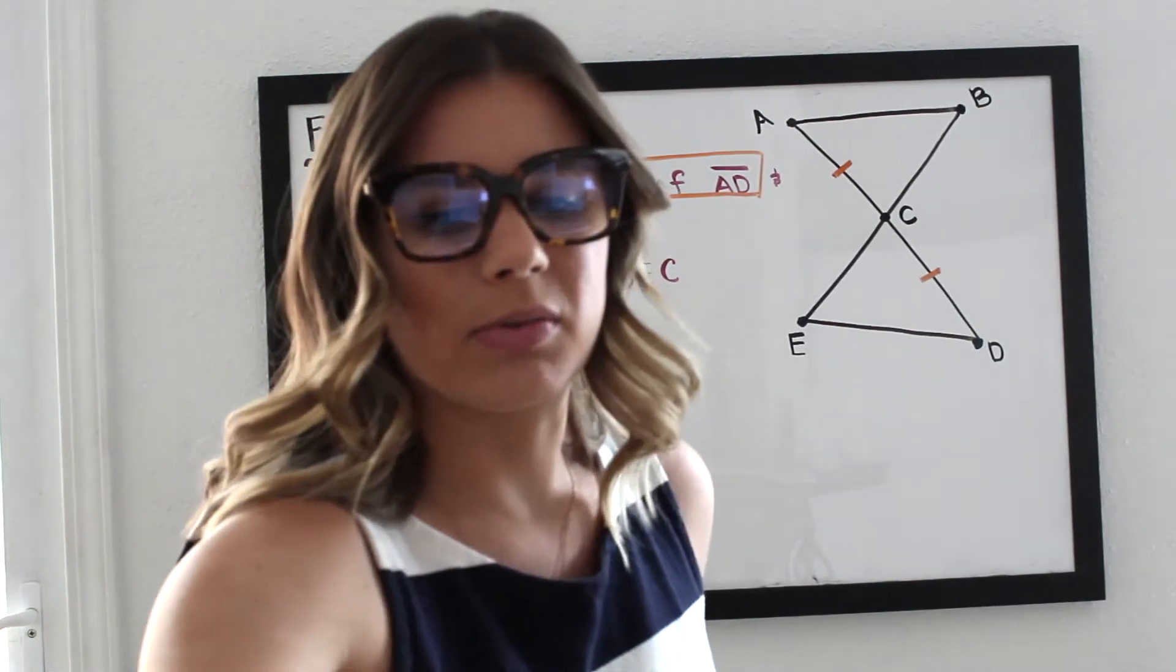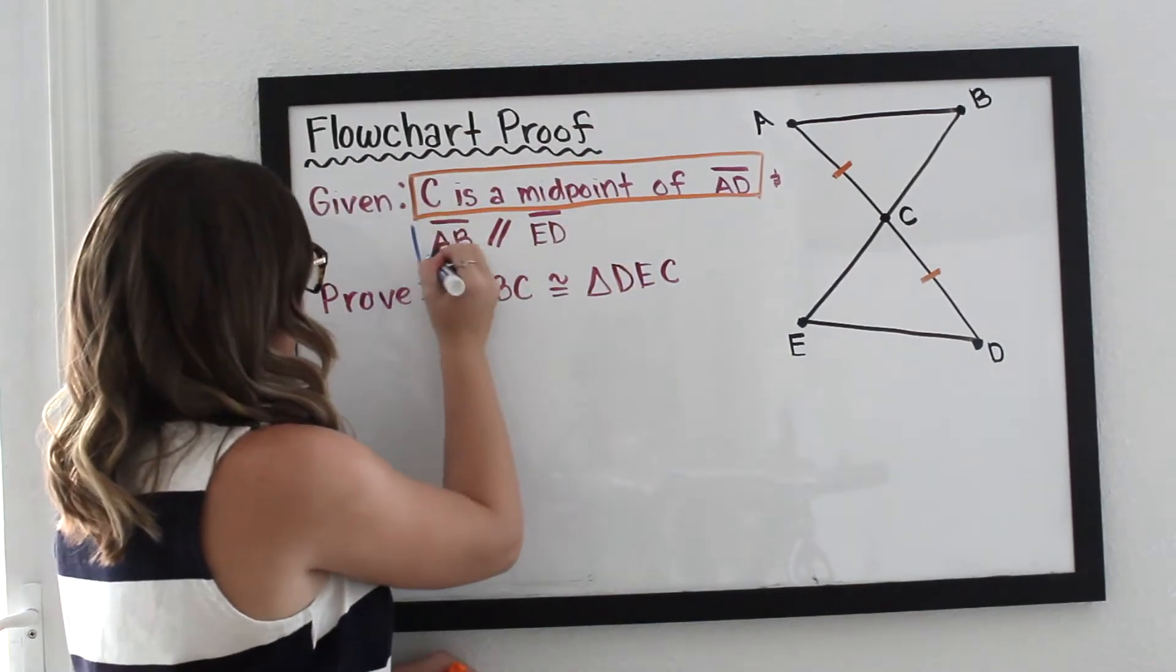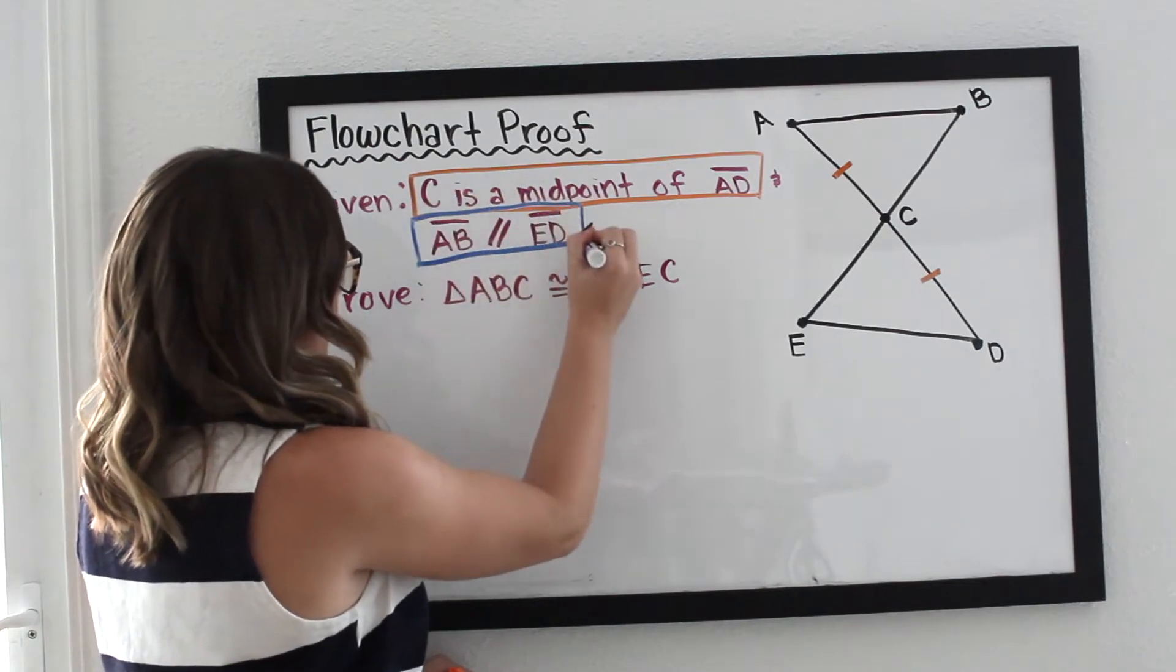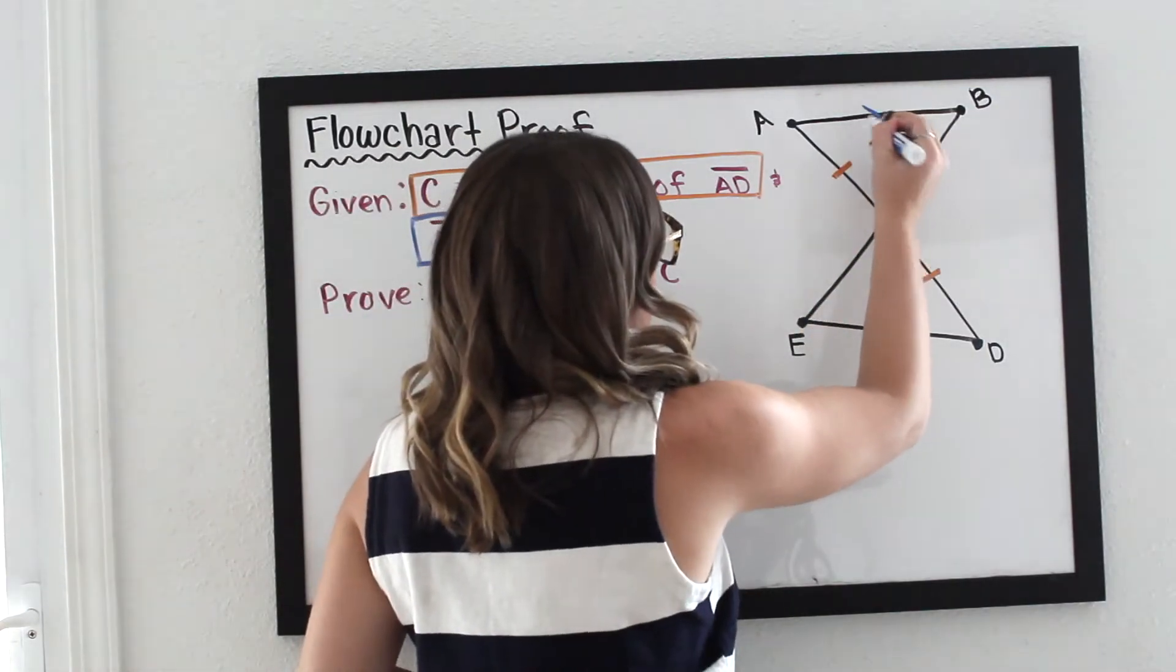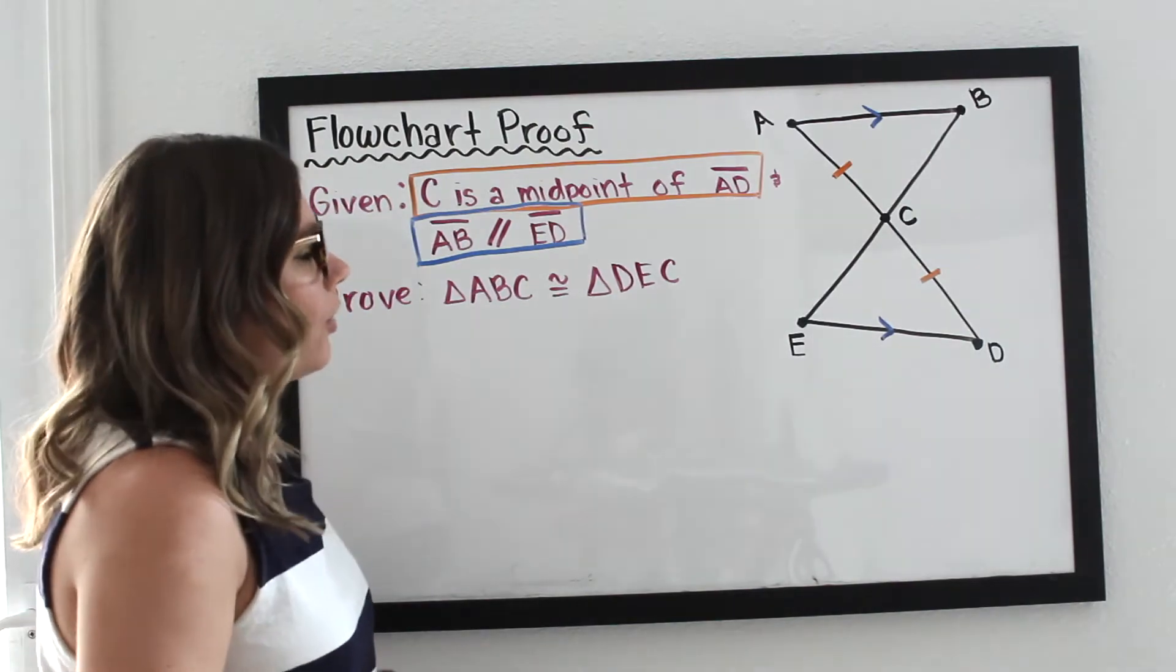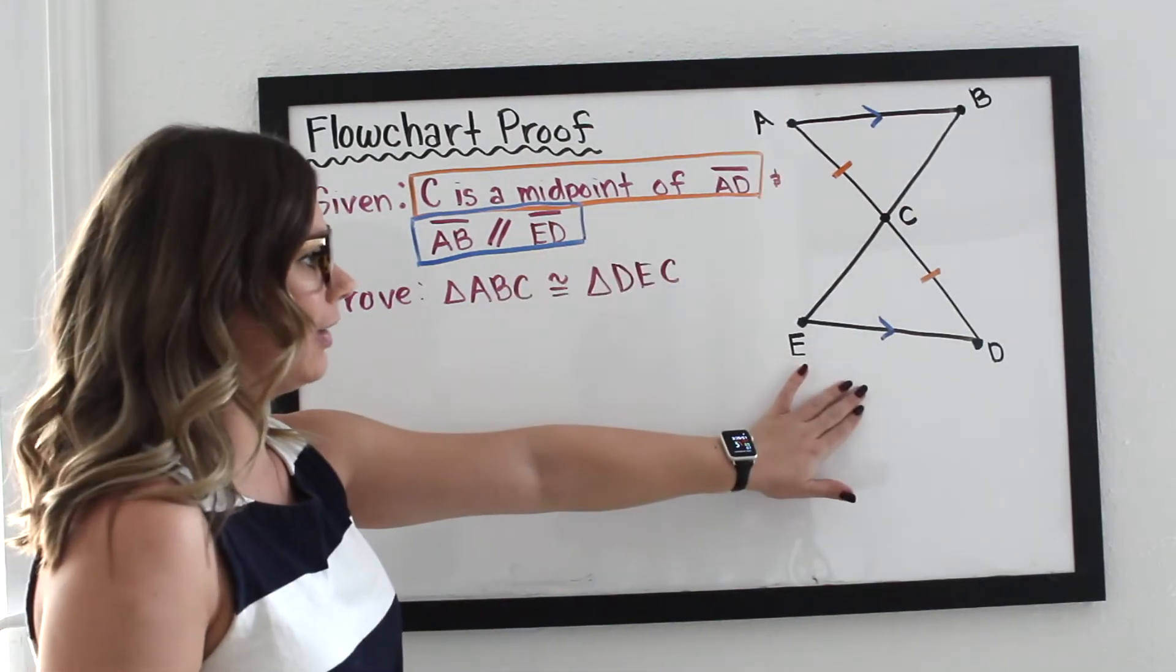The next piece of information that I am given is this piece right here. It says AB is parallel to ED. So what I'm going to do is draw some arrows here and here, so that way when I look at my diagram, I'm reminded that AB is parallel to ED.